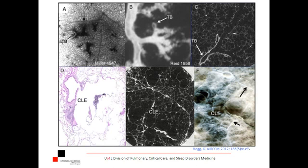Continued exposure to tobacco smoke creates this chronic inflammatory phenomenon that theoretically makes the FEV1 drop over many years and worsens the disease. This three-dimensional cut view of a lung shows these large cystic areas — probably in this area you might have had several secondary lobules that were totally obliterated and formed one large cystic cavity.